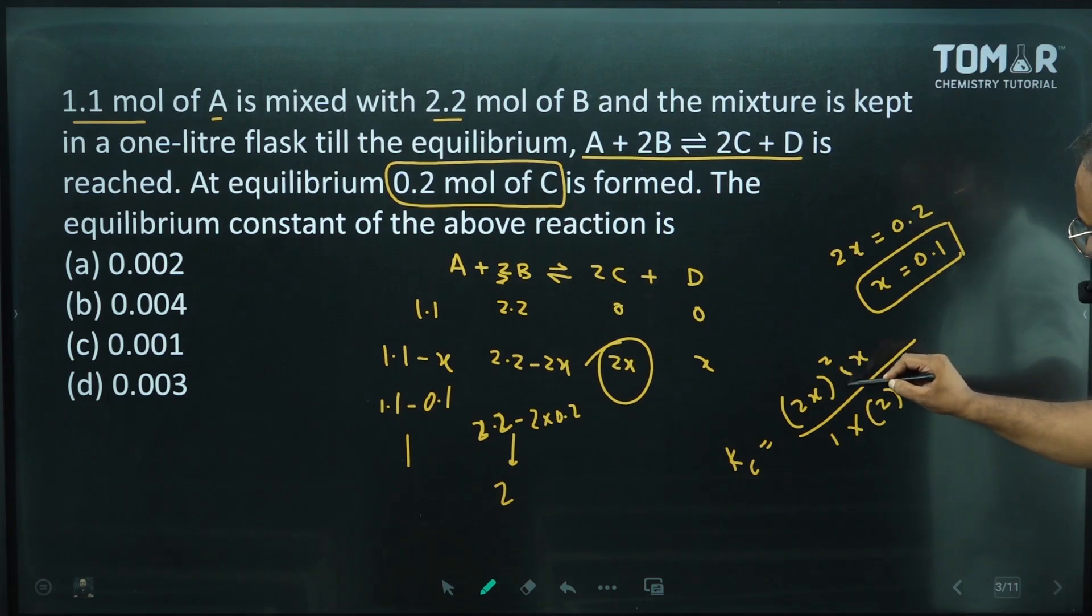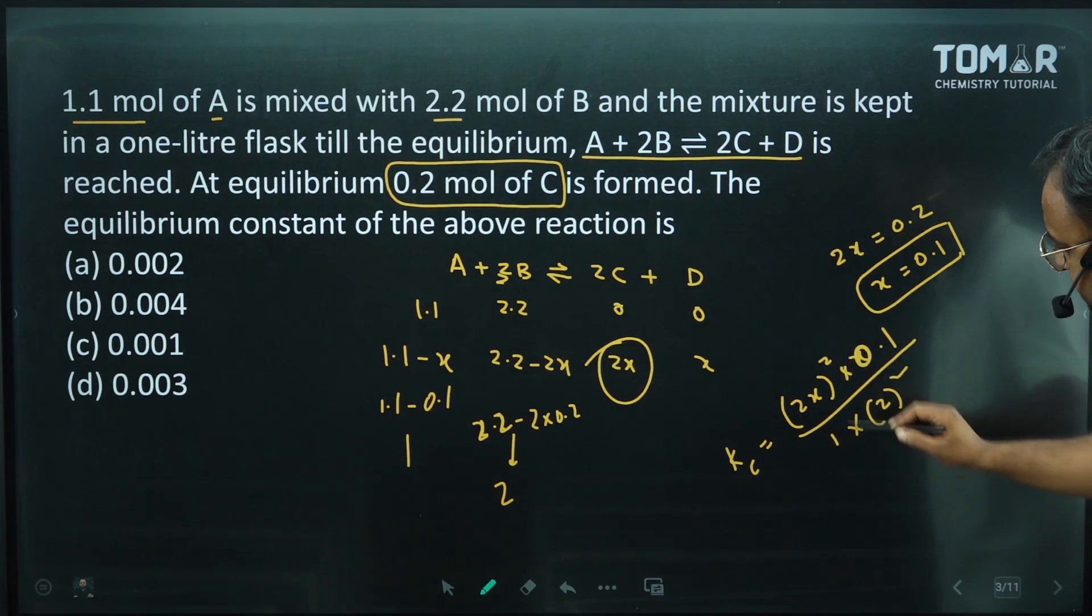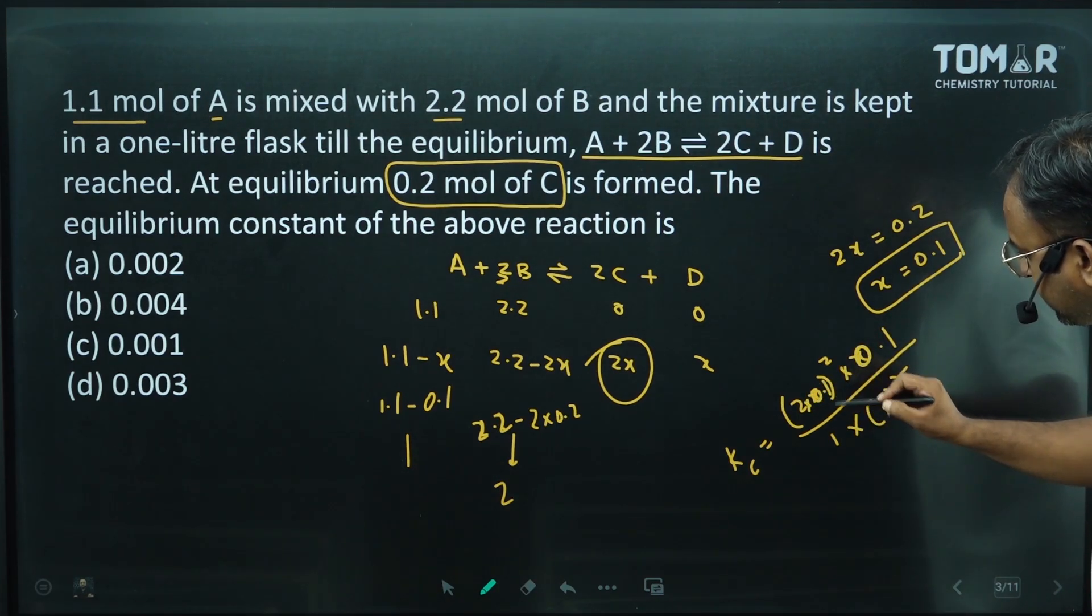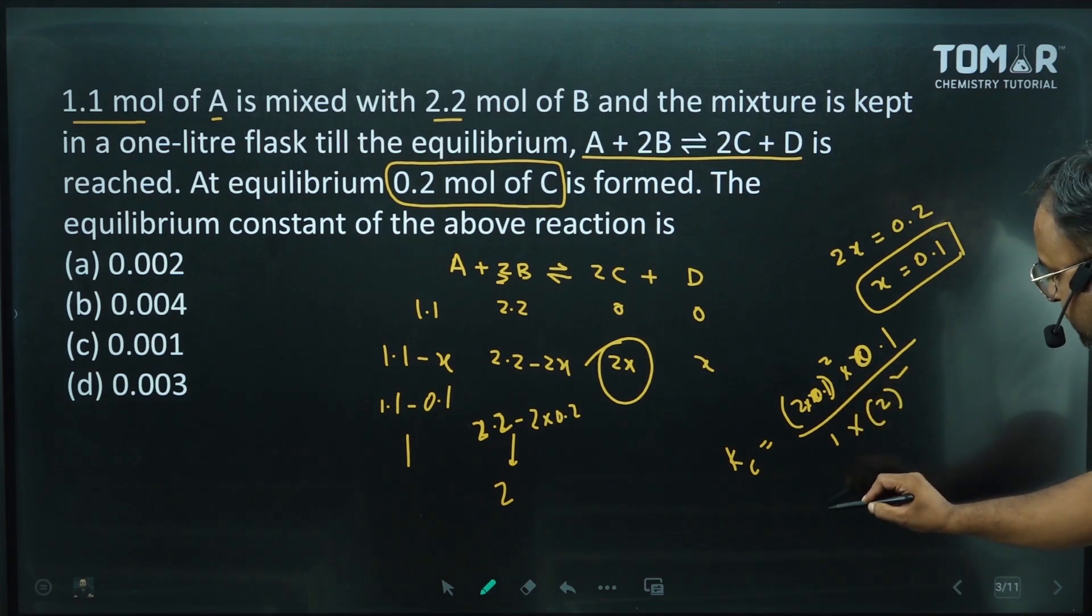Now what will happen? 0.1. Let's put it here. 0.1. This is 2 into 0.1, then this will become 0.2.